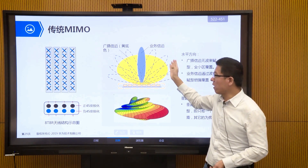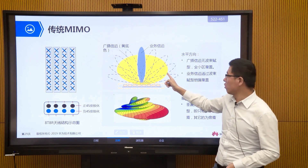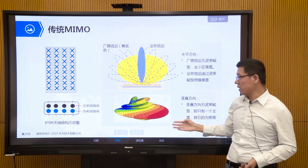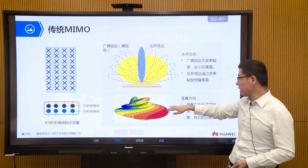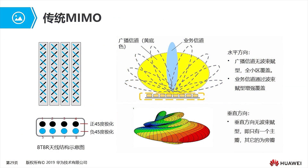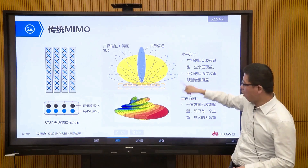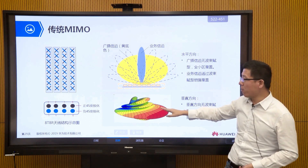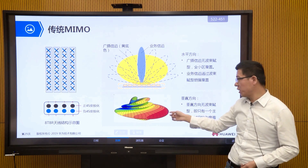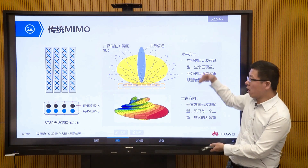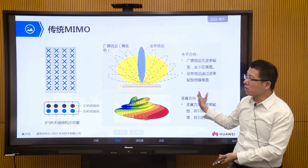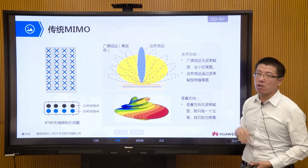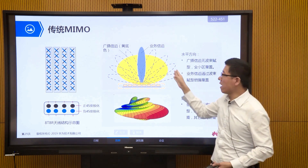Looking at our coverage direction map on the vertical plane, we only have one direction. That means for a very high building — say a 30-story or 50-story building — traditional MIMO can't achieve high-rise coverage, because its vertical direction only has one beam. It can only cover, for example, the bottom 10 floors; above the 20th floor you may have no signal. So this is a disadvantage of traditional MIMO: it can't form multiple beams in the vertical direction, its coverage ability for high-rise buildings is relatively weak, and it has no beam shaping on the broadcast channel. The gain it brings is also limited.